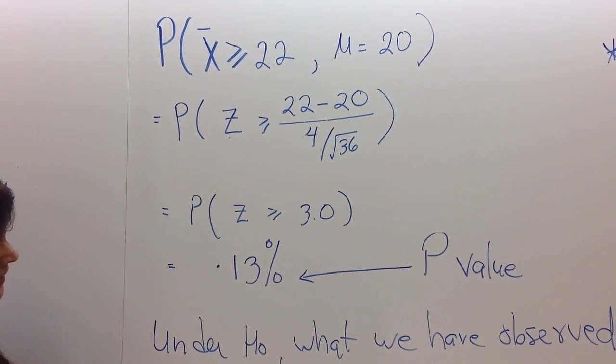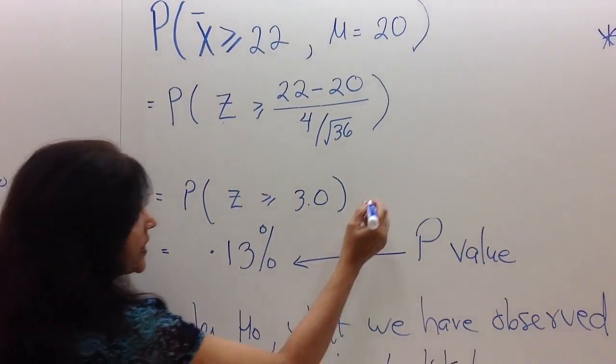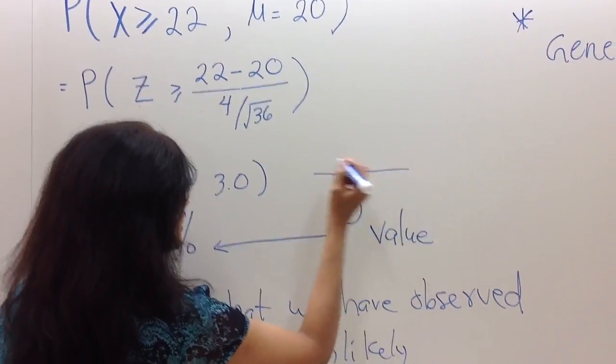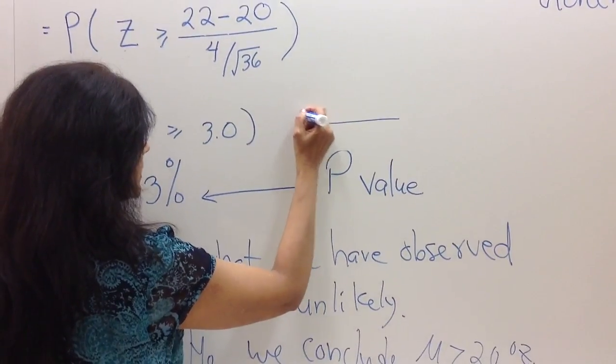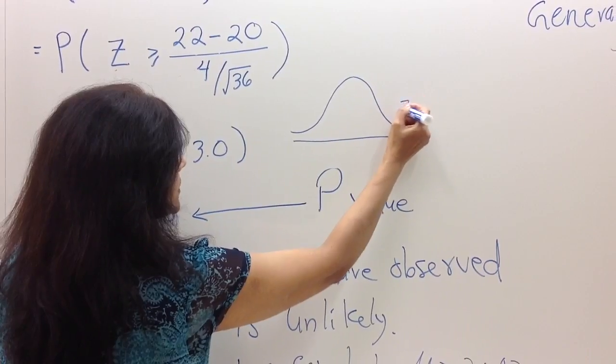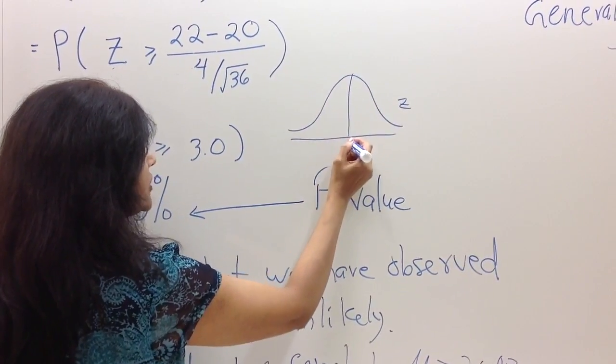How do we calculate this probability? Well, one way is to read the normal table, or you could use the graphing calculator. This is a typical graph of z-scores, mean being 0.